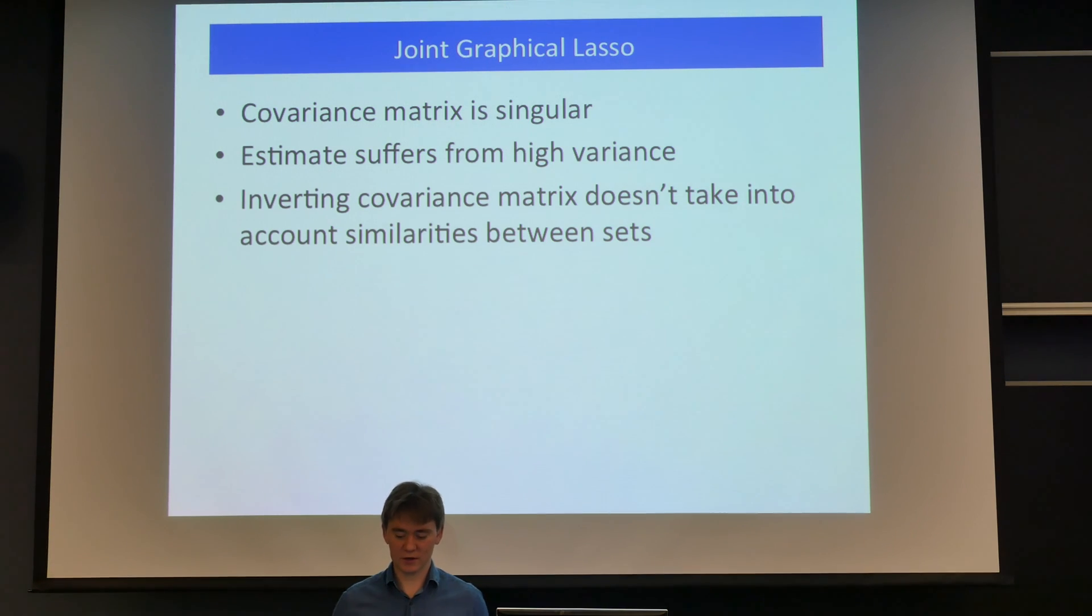So there is a bunch of techniques to calculate partial correlation, for example by inverting covariance matrix or by regression. But they all have drawbacks - in our situation, covariance matrix is singular because number of features much larger than the number of samples, so estimates suffer from higher variance. And inverting covariance doesn't take into account similarities between two sets. So we have two sets from the same patient, from tumor and non-tumor tissue, so they should be pretty much the same.